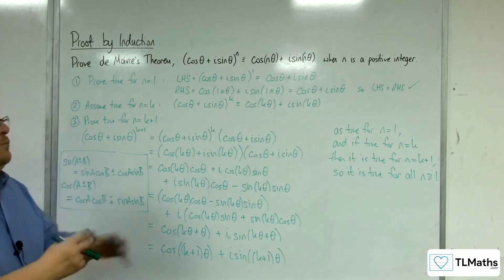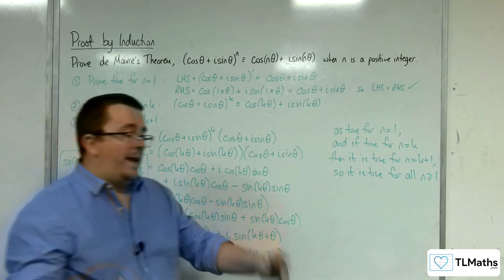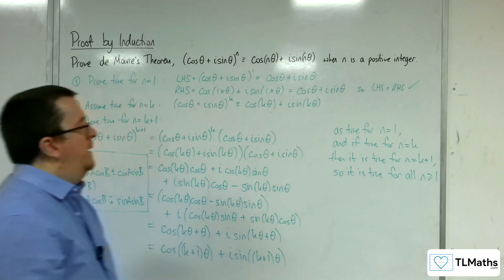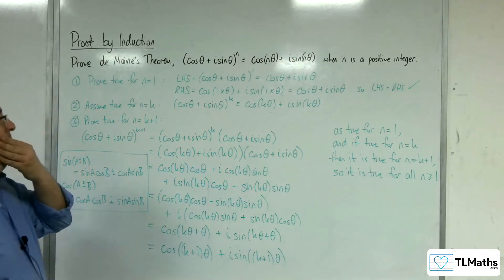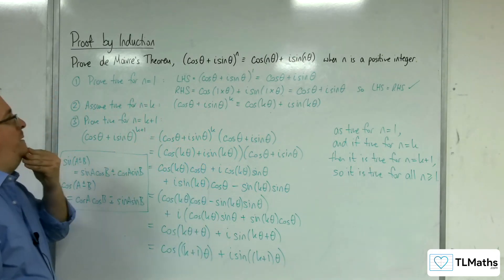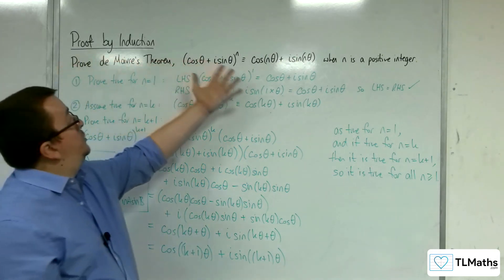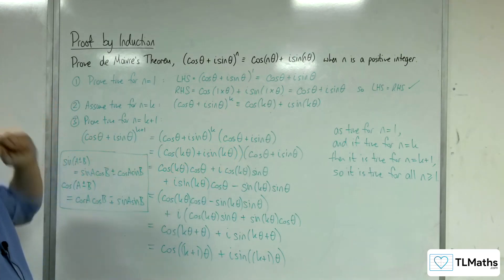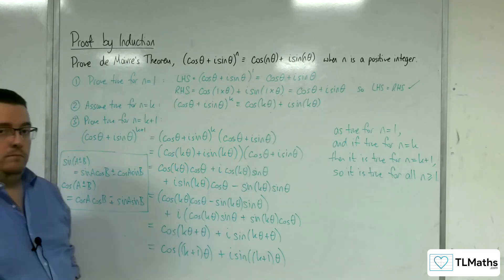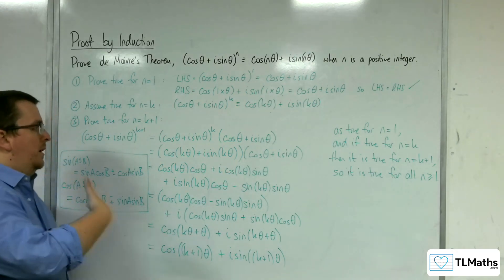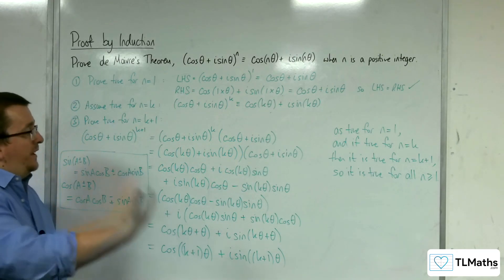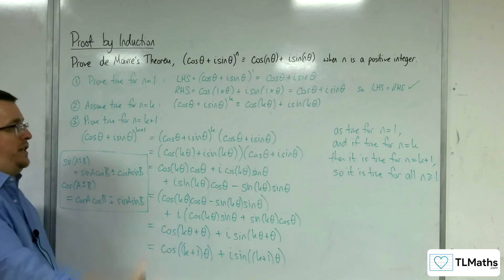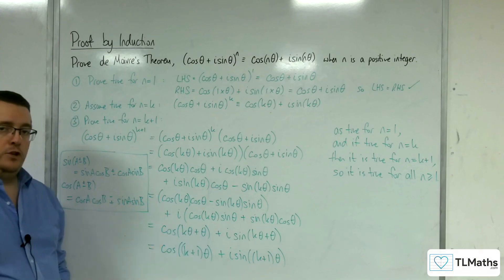As a reminder, this proves de Moivre's theorem just for n ≥ 1, i.e. positive integers. The theorem is actually true for all real values of n. This is how proof by induction can be used at this stage.